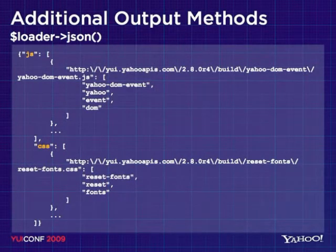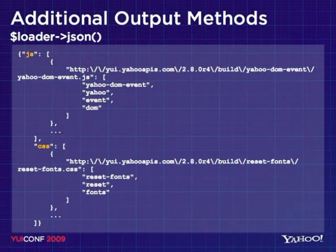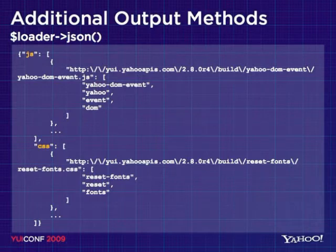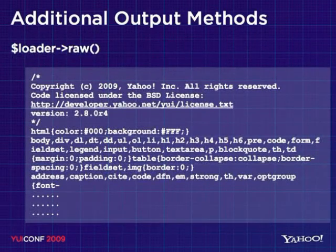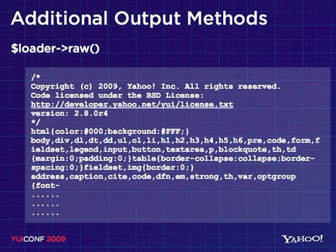Another method is JSON — basically the same as data, except you get a JSON structure back. You can see it's broken out into JS and CSS with the components that have gone into each. We also have raw, which is similar to embed except it gives you just the raw code without wrapping it inside script or link nodes.